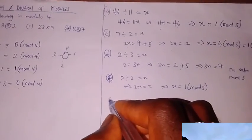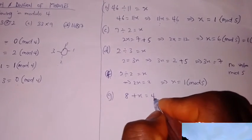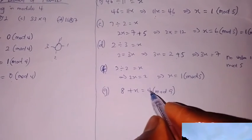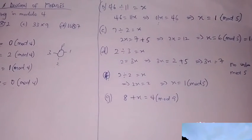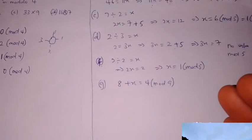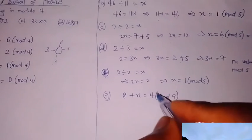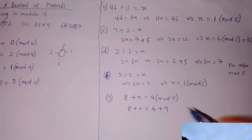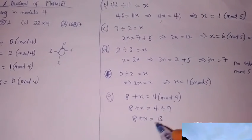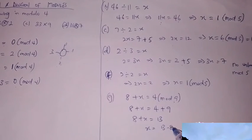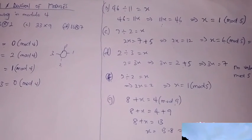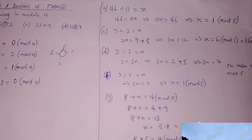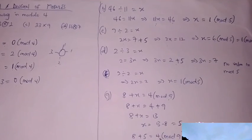Now, let's assume we're given a question like: 8 plus x equals 4 in modulo 9. If I say x equals 4 minus 8, I cannot give a negative answer. So what I do is add the modulo to the right-hand side: 4 plus 9 equals 13. So 8 plus x equals 13, which means x equals 13 minus 8, which is 5. Let's confirm: 8 plus 5 is 13; in modulo 9, 9 goes into 13 once with remainder 4. That's correct.